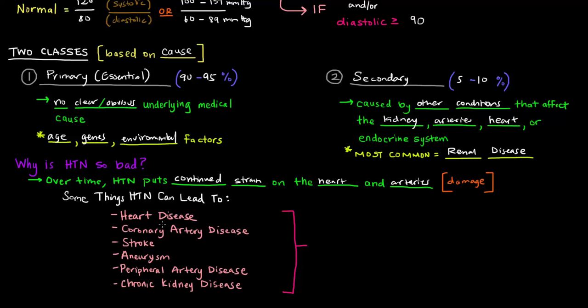And if the heart or arteries are damaged, then that could lead to a bunch of different things, including heart disease, stroke, and aneurysms, which all shorten life expectancy, which is not something we want if we want to live long, happy lives. So we want to prevent hypertension.